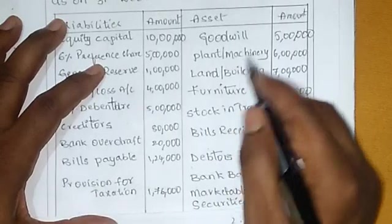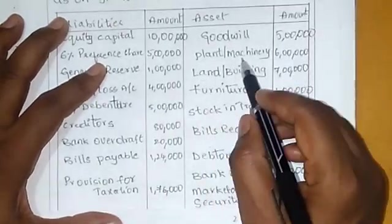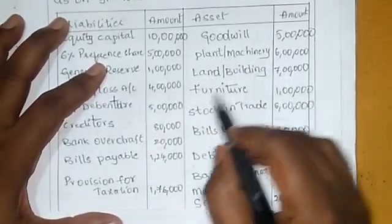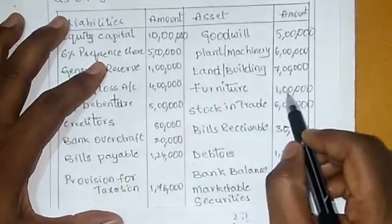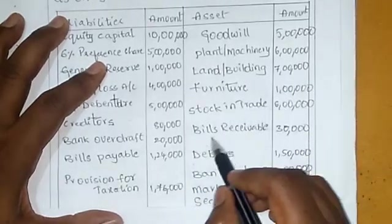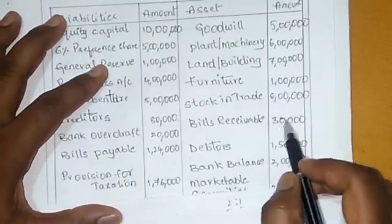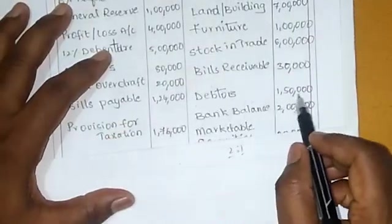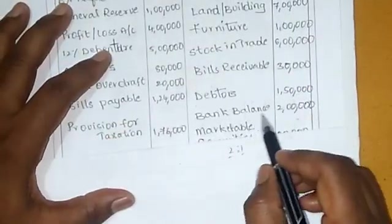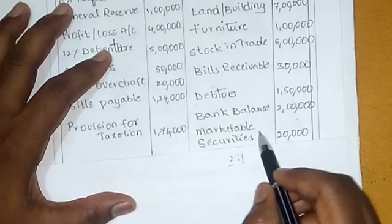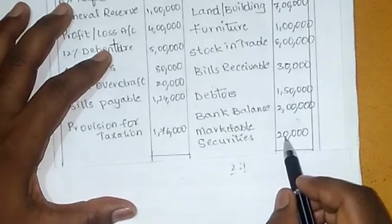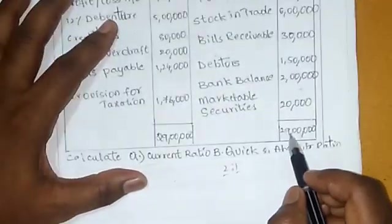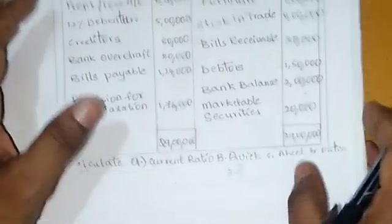Now let's look at the assets side. Goodwill 5 lakhs, plant and machinery 6 lakhs, land and building 7 lakhs, furniture 1 lakh, stock in trade 6 lakhs, bills receivable 30,000, debtors 1 lakh 50,000, bank balance 2 lakhs, marketable securities 20,000. Total assets come to 29 lakhs.